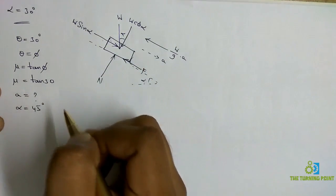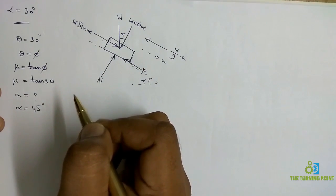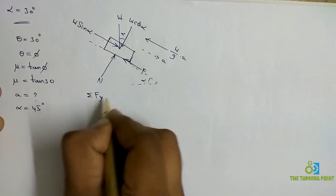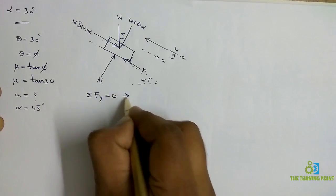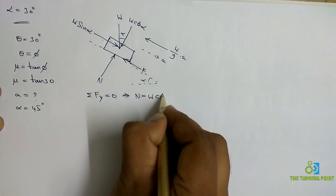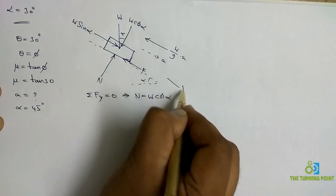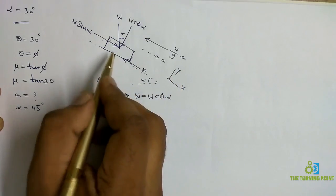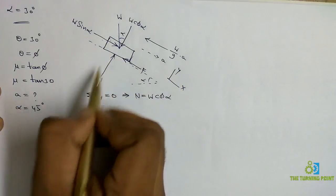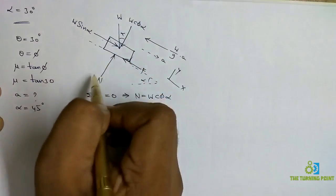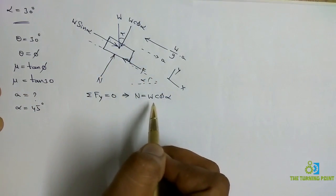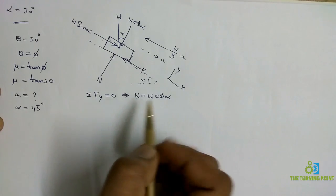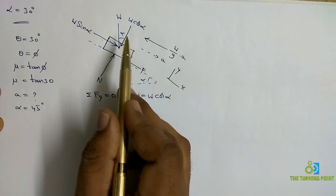Now consider sigma Fy equals zero first. Taking x-axis along the plane and y-axis perpendicular to the plane: N acts along positive y-direction, W·cos alpha acts along negative y-direction. Therefore N equals W·cos alpha. The object will not move along the y-direction.